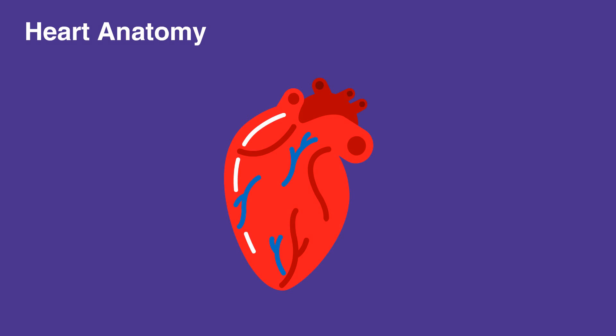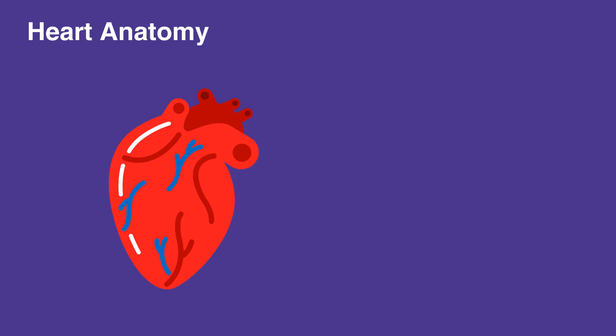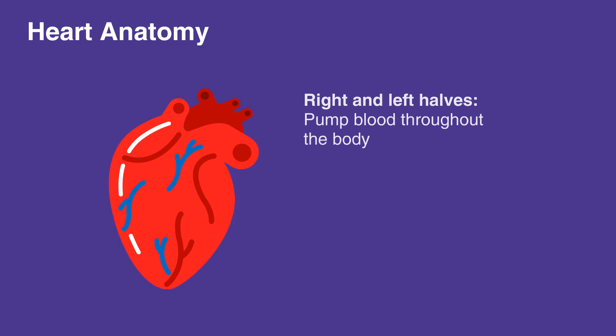The heart is a hollow muscle comprised of four chambers that are all surrounded by thick walls of tissue called septum. The two upper chambers are the atria and the two lower chambers are the ventricles. The right and left halves of the heart work together to pump blood throughout the body.